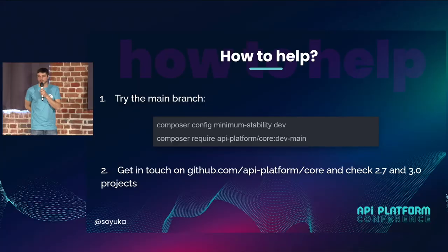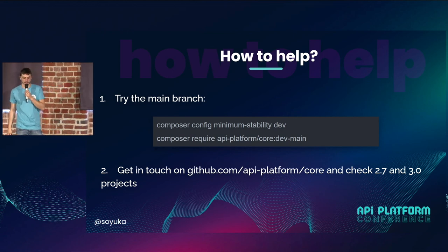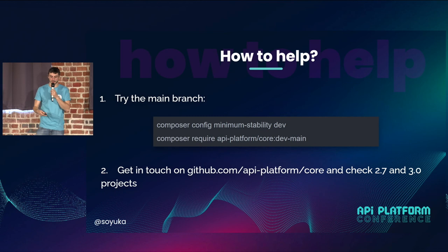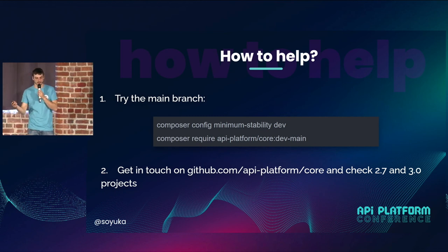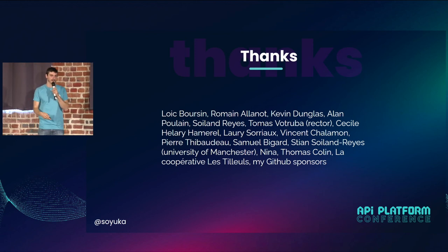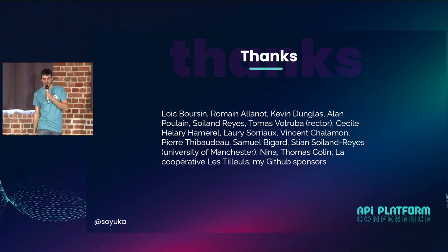How to help? You can try the main branch using these two lines of command and get in touch on GitHub. Check the projects page where we have 2.7 and 3.0 projects with a bunch of issues. I want to thank all these people that helped me a lot — Loic and Romain worked on Rector, and Rector is hard to get into because it's working with the AST. And all the other people that helped on this project.